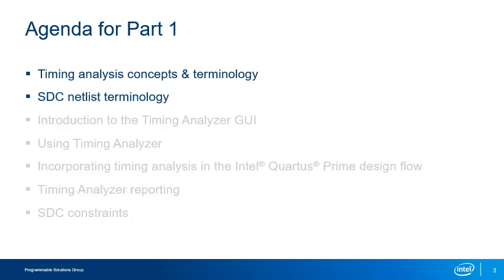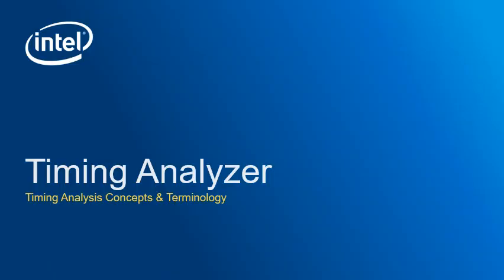Here's the agenda for this training. First, we'll start with a look at basic timing analysis concepts and terminology used in Timing Analyzer, including terminology used to select nodes from the SDC netlist for targeting timing constraints. Subsequent parts of this training, available on the Intel training website, will introduce the Timing Analyzer GUI, the design flow, reporting features, and the SDC constraints required to fully constrain a design.